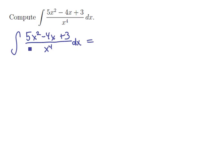Notice that it has a denominator, so I'm just going to bring that denominator up to the top and have x to the negative 4 times 5x squared minus 4x plus 3 dx.